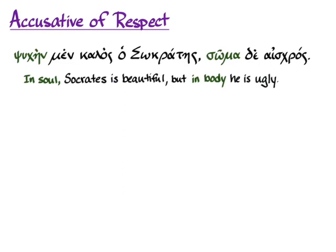So "Psychein" and "soma" in the accusative case limit the extent to which each of these statements on either side of the "men" and the "de" are true. Socrates is beautiful, but only in respect to his soul — only to that limitation. And he's ugly, but only in respect to his body with that limitation. So the accusative of respect is a limiting function of a case.